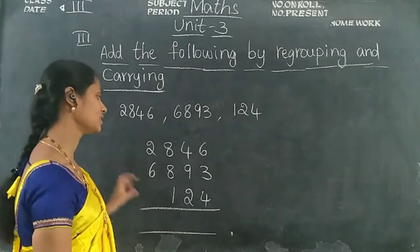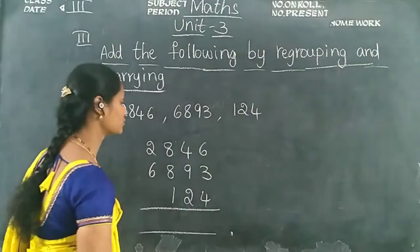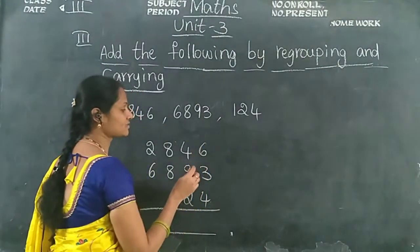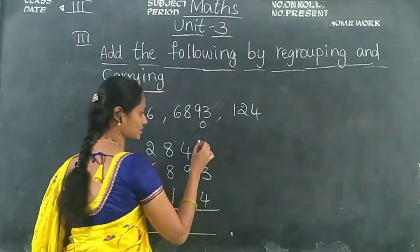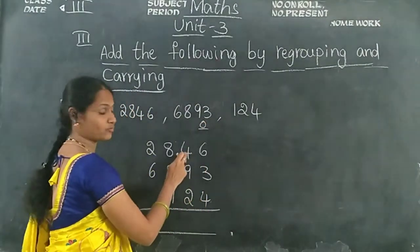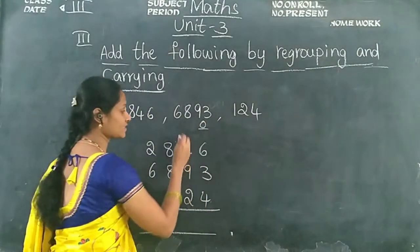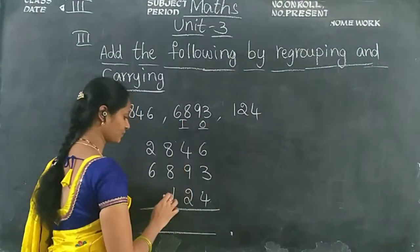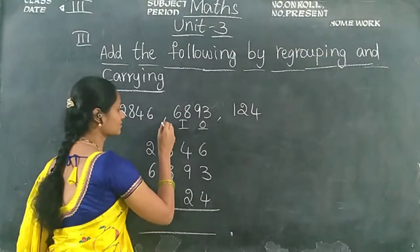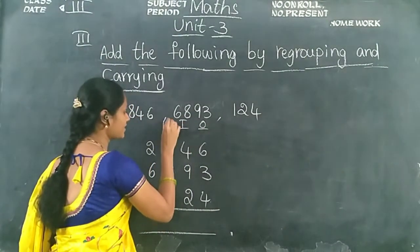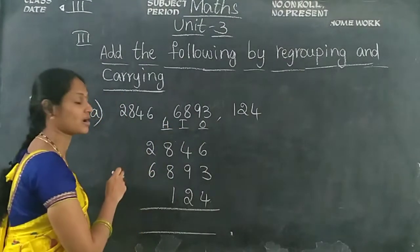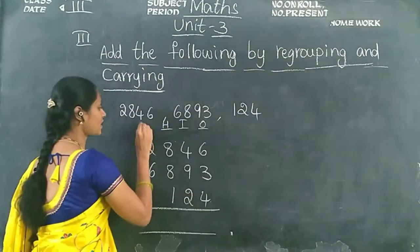Now see the values. 4, 3 and 6 are in the ones place. 2, 9 and 4 are in the tens place. 1, 8, 8 are in the hundreds place. 6 and 2 are in the thousands place.